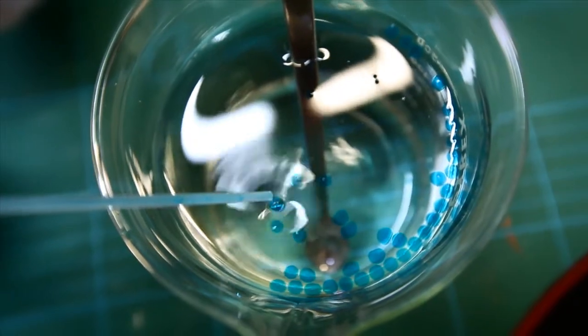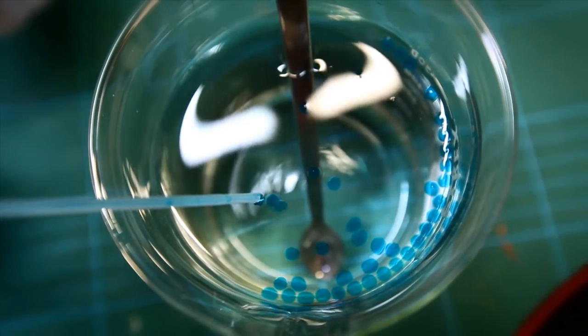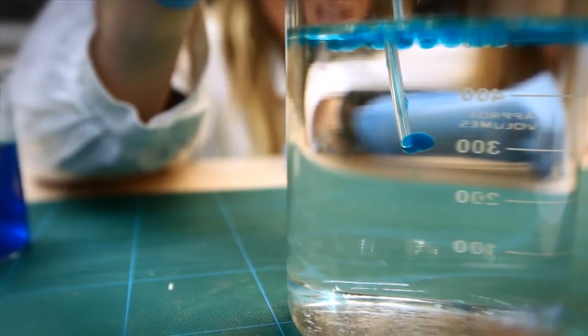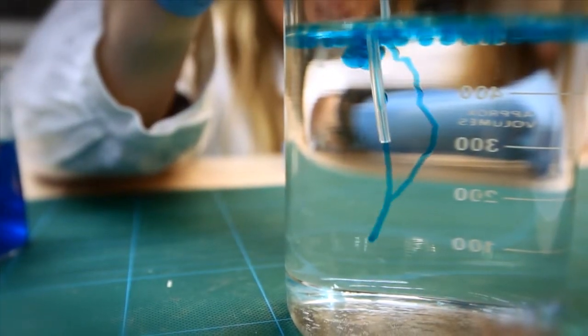The drops will form small, round gel beads upon contact with the calcium chloride. And if you put the pipette in the calcium chloride solution, you can make gel worms.